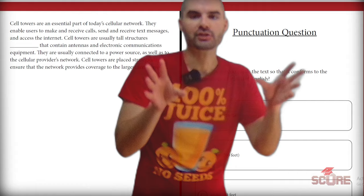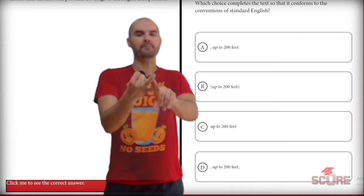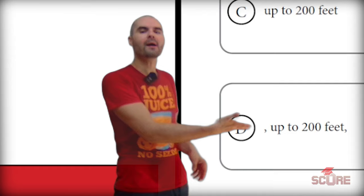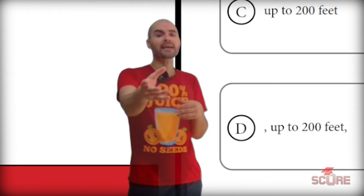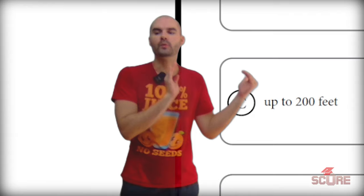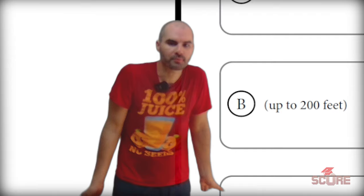I know that I can add extra information between commas, em dashes, or parentheses, but the way that works is slightly different with each one. If I use commas, it really should be a complete clause, and I shouldn't use any sort of shorthand. In this case, the proper sentence would be 'up to 200 feet tall.' And since I'm lacking that word 'tall,' this is kind of an incomplete fragment. So what I'm going to do is just put it in between parentheses, because there are no strict rules inside parentheses for the most part. So we're going to go with B and move on.